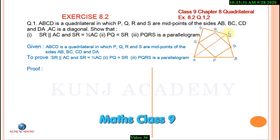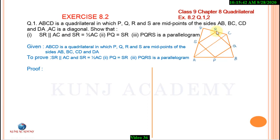ABCD is a quadrilateral in which P is the midpoint of AB, Q is the midpoint of BC, R is the midpoint of CD, and S is the midpoint of AD. We need to prove: Number 1 — SR is parallel to AC and SR equals half of AC.